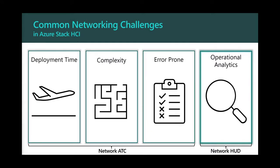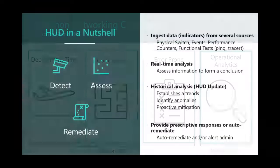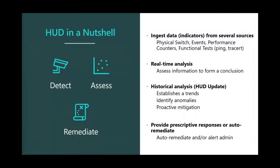We started out with deployment time, complexity, and error-prone issues — those are things Network ATC addresses. But operational analytics is something that Network ATC doesn't address. Network HUD is going to address these things. Network HUD is a service that will ingest data from a variety of different sources — the physical switch, event logs, performance counters, and functional tests. Now we have another large problem: you have to be an expert at knowing how to ingest and interpret the data. When you see an error on your system, how do you draw the answer out from the vast amount of data being provided to you?